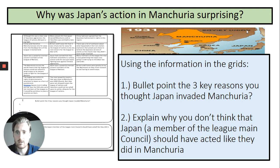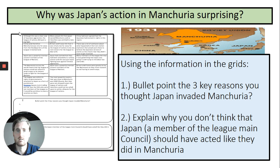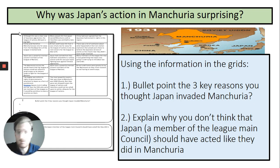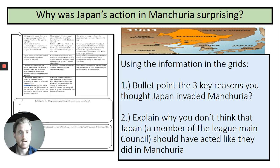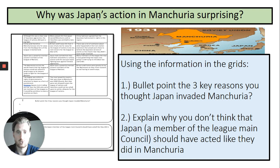I want you to recap this information and open the sheet that should have been sent to you. It's basically got some information summarising the Manchurian crisis. I want you to think: what are the three reasons you thought Japan invaded Manchuria? There are many reasons why they invaded and you can't remember them all for your exam. So reading that information, what are the top three reasons? Then for task two, I want you to explain why Japan, as a member of the League of Nations and the League's main council, should not have acted like they did. Once you've completed that task, please click continue and we will start to look at an exam question in more detail.